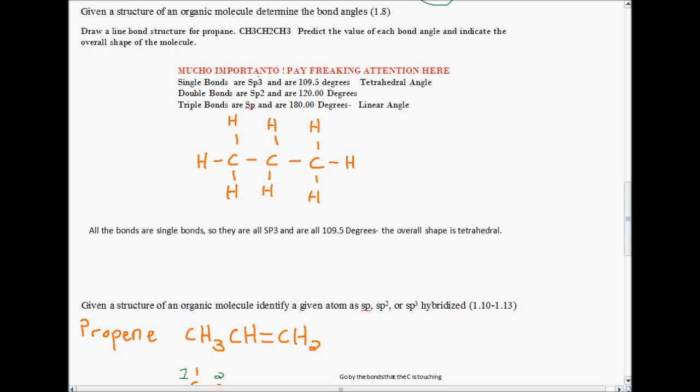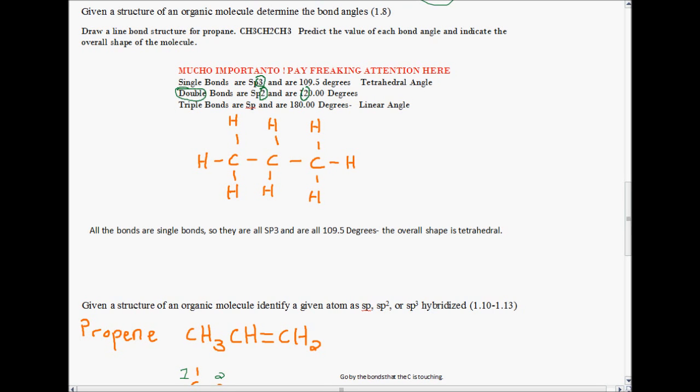So, single is 3. Double is SP2, 120 degrees. You can see the twos in here. Triple bonds are SP, 180 degrees. So, the degree of SP goes down by one with each bond, and the angle becomes more linear. So, here we have propane, CH3CH2CH3, and that's how you would write it with a line bond structure. Now, here, these are all single bonds. So, they're all SP3. They're all at 109.5 degrees. So, the overall shape is tetrahedral.